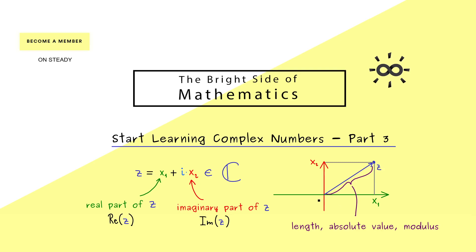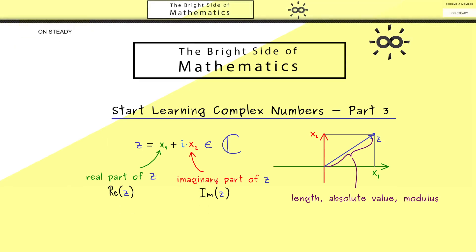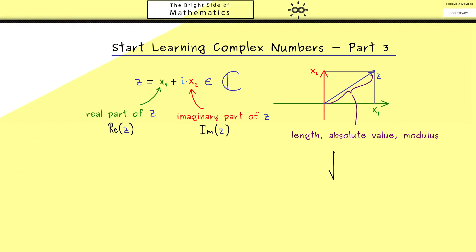Okay now what you should see is that we can easily calculate this length when we use the Pythagorean theorem. Here you should immediately see the right angle in the triangle. This means that the length is given by the square root of real part of z squared plus imaginary part of z squared.